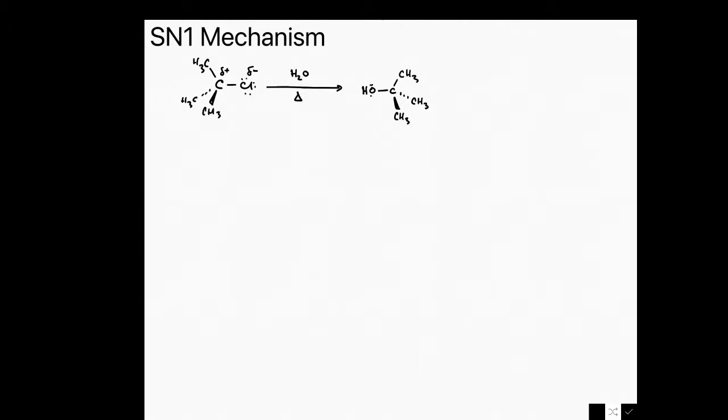And we're ending up with tert-butanol, where the hydroxyl group is delta minus and the carbon bearing it is delta plus. So overall, this is called a substitution reaction. We've substituted chlorine for OH. We've started with an alkyl chloride and we're ending up with an alcohol.